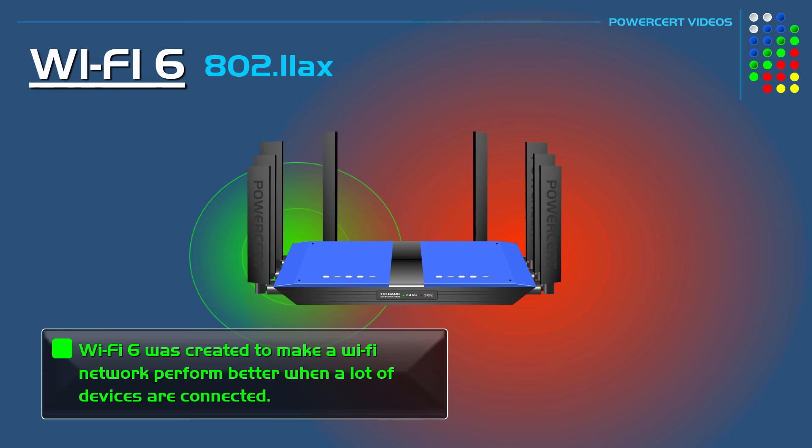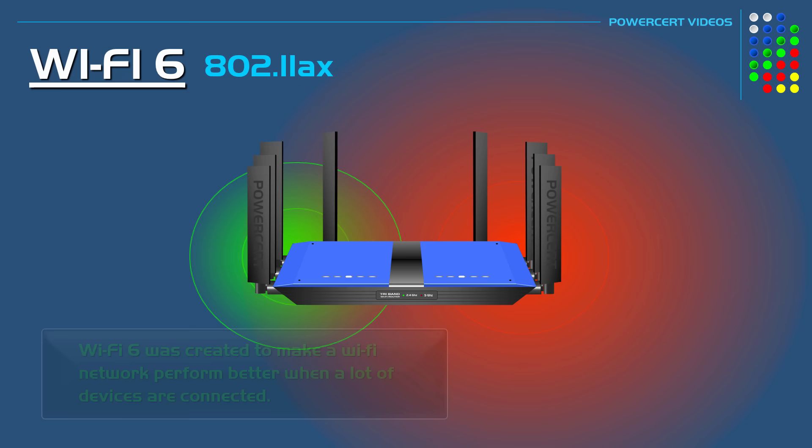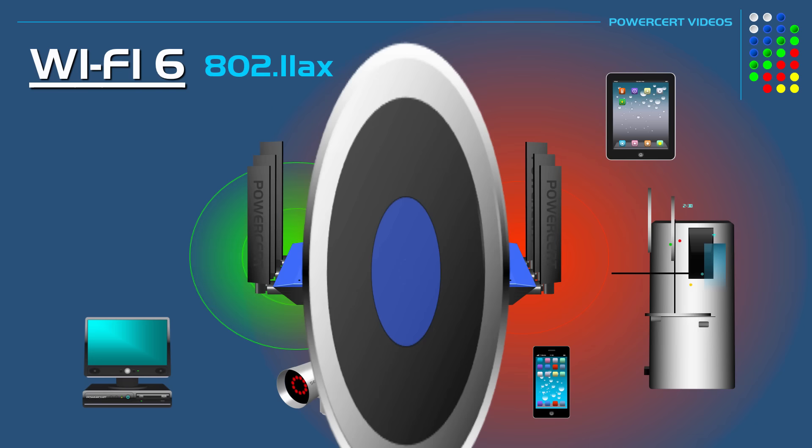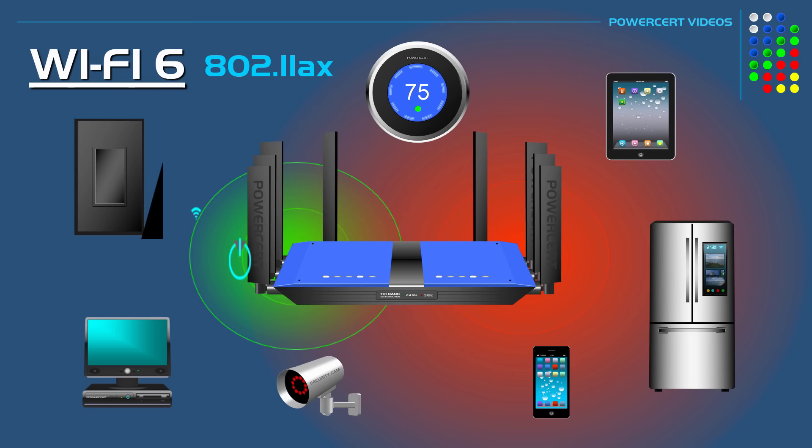This is because today there are so many devices in our home that use Wi-Fi, such as computers, tablets, phones, security cameras, refrigerators, light switches, thermostats, and so much more. And with so many devices competing for the Wi-Fi signal, it can slow down a network because a Wi-Fi router can only communicate with so many devices at a time. So to meet this demand, engineers developed Wi-Fi 6.